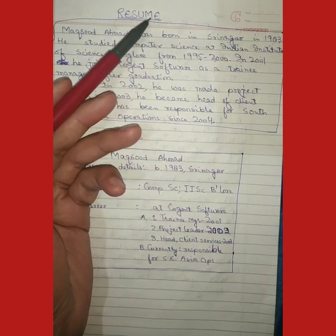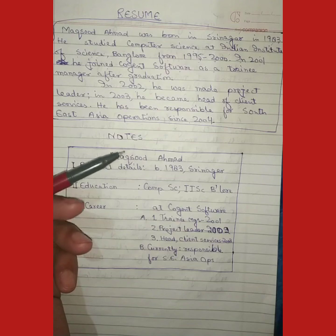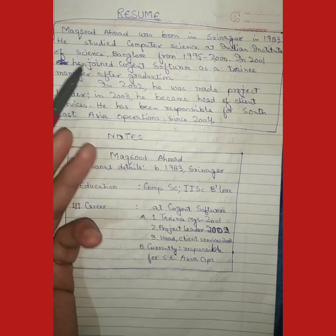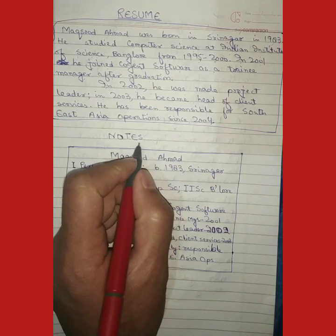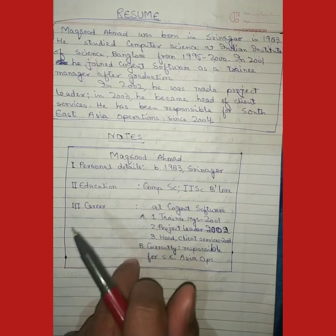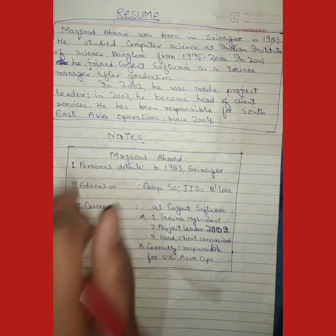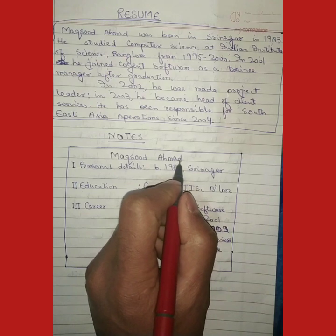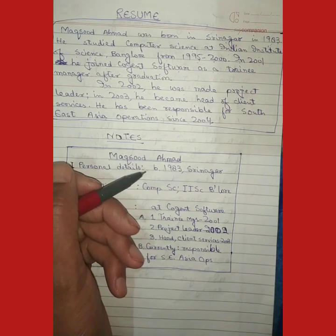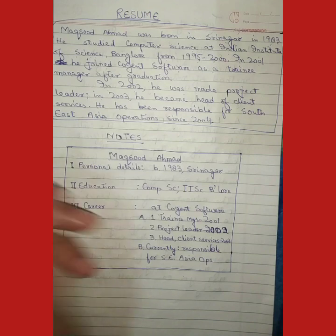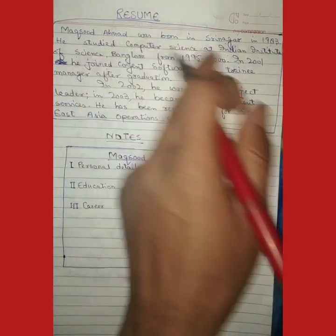These two paragraphs represent the resume of Mr. Maksud Ahmad. Now, how do we make notes out of this resume? We will write 'Notes' at the top, then make a rectangular box, and write 'Maksud Ahmad' underlined, because this is the title of the notes. I already told you that you have to give the title — without a title you will forget, so the title is important.